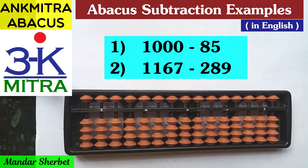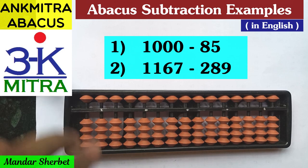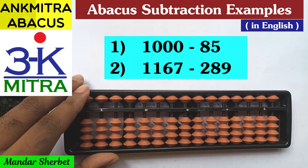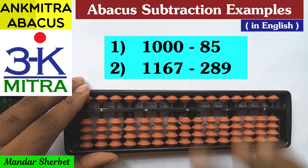The first sum is 1000 minus 85. This is a particular situation that many students will encounter sometimes, so they should know how to handle it. Let's see how to do it.